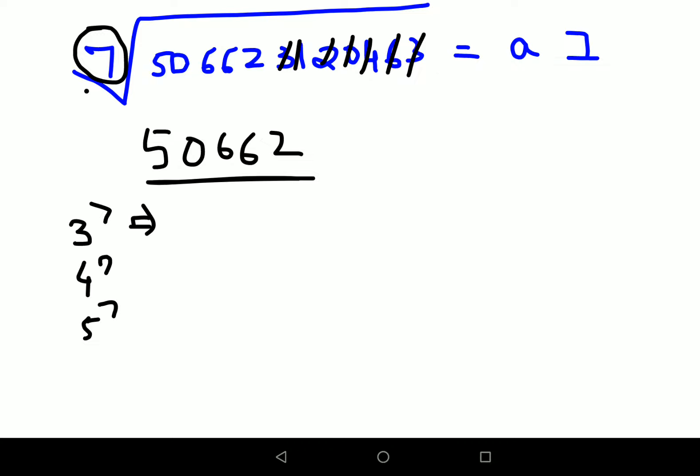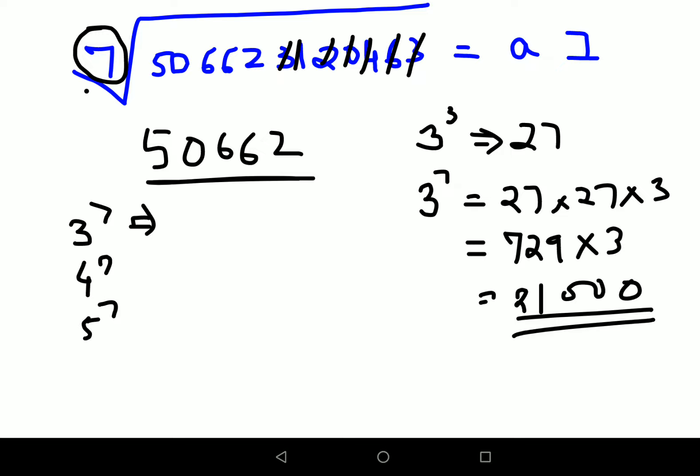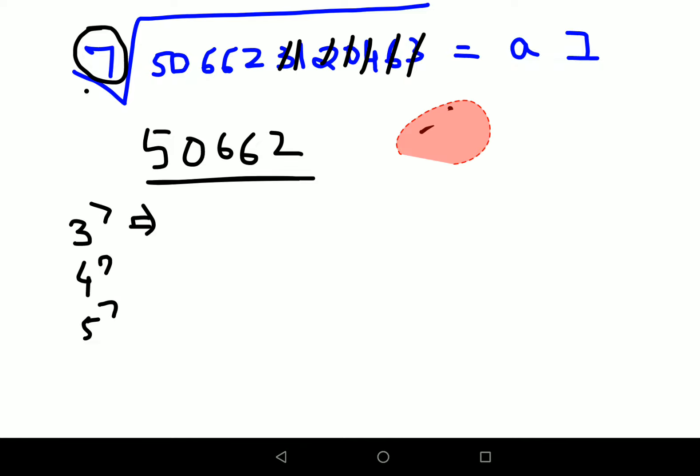Now 3 raised to 7 is basically, see, 3 raised to 3 is 27. So 3 raised to 7 can be written as 27 into 27 into 3. Now 27 into 27 is basically, you are trying to do 27 square. So in that case, what will happen is you will get the answer as 729 into 3. So again, 700 into 23 will get you something around 21,000. So that is very, very smaller than 50,662. So obviously, 3 has gone out of question for us.